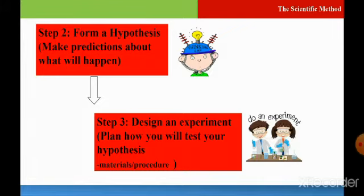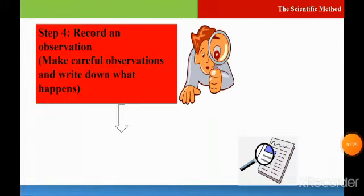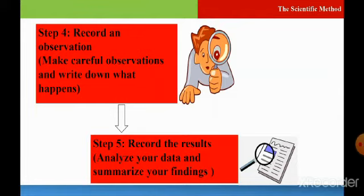Step number four: Record an observation. Make careful observations and write down what happens. You will use your senses in order to record an observation. Step number five: Record the results. You will analyze your data and summarize your findings.